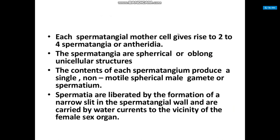The spermatangia are spherical and oblong unicellular structures. The contents of each spermatangium produce a single non-motile spherical male gamete called a spermatium. The spermatia are liberated by the formation of a narrow slit in the spermatangial wall and are carried by water current to the vicinity of the female sex organ.